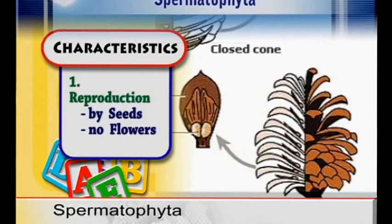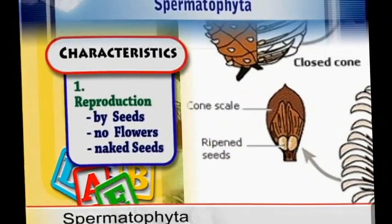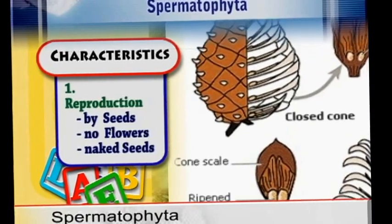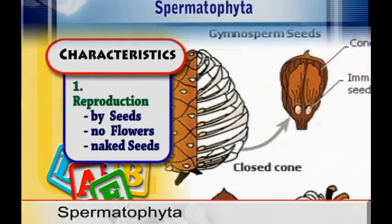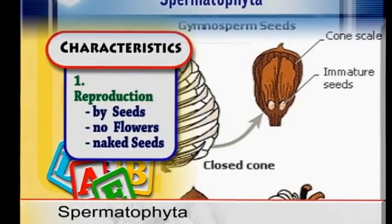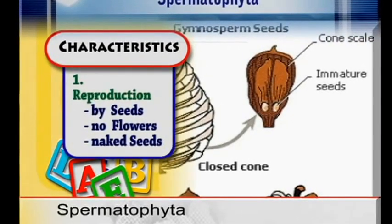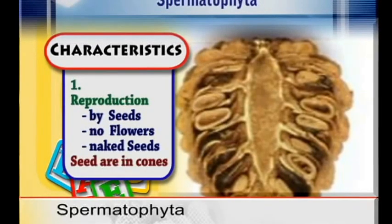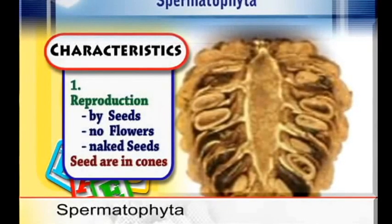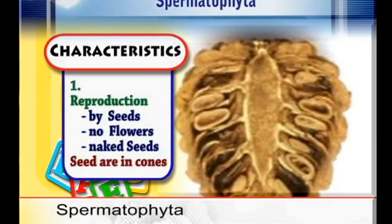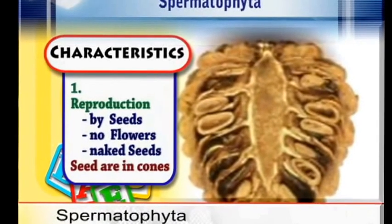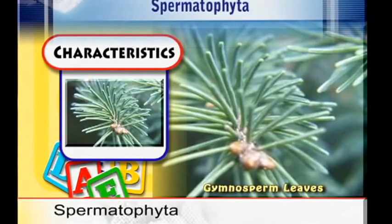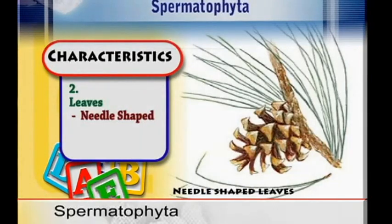That means that their seeds are naked. Their seeds are not covered in the ovary. Most seeds are covered in ovaries — that is for the Angiosperms. But for the Gymnosperms, the seeds are in cones. They are not covered in the ovary, neither do we find them in fruits.